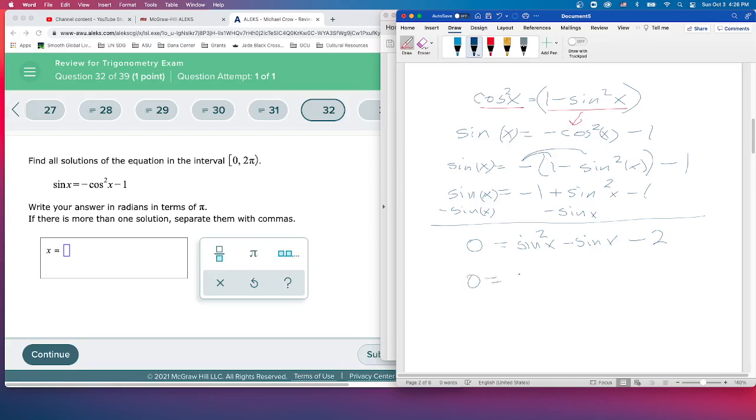Now we start to think, how can we factor this? Well it's a quadratic, so we look for a binomial. The first term is sine squared, so that looks like I could do that with a sine x times sine x. Okay, so when I FOIL this out, I'm going to get sine squared.